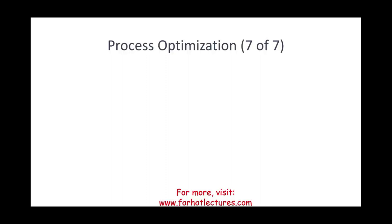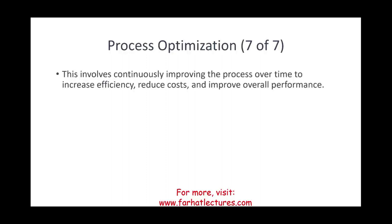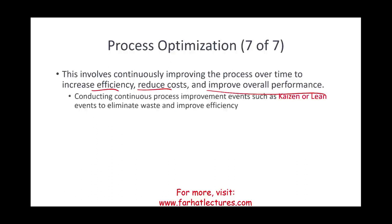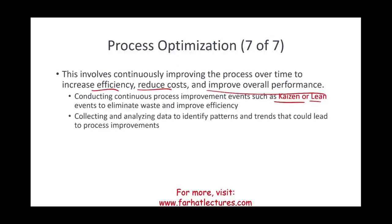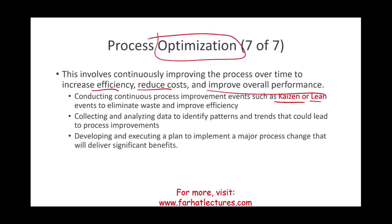Finally, process optimization involves continuous improvement over time to increase efficiency, reduce costs, improve overall performance, and as a result, improve customer satisfaction. This includes conducting continuous process improvement events like Kaizen or lean events to eliminate waste, collecting and analyzing data to identify patterns and trends, and developing and executing plans to implement major process changes that deliver significant benefits — making the process better and better over time.